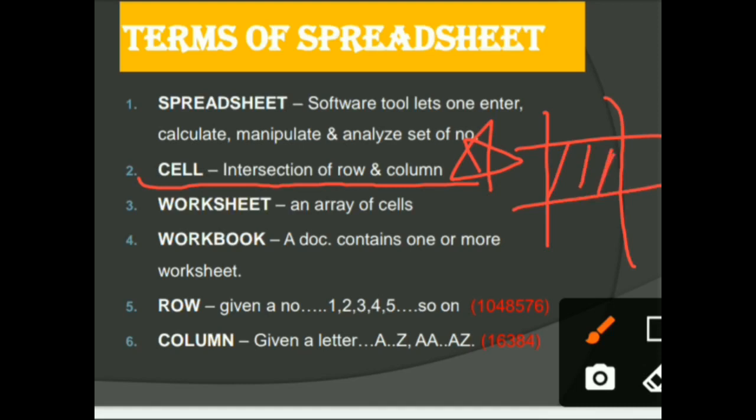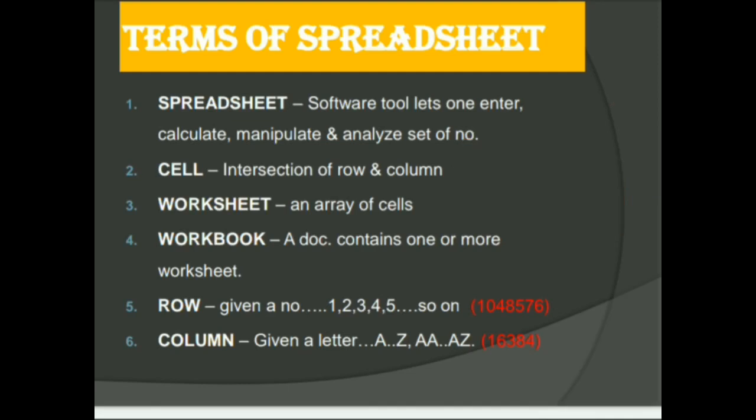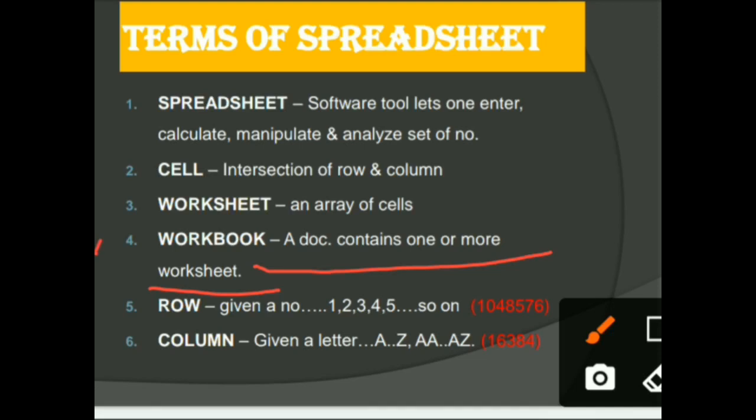Next is the Worksheet. An array of cells or a grid of cells, a complete set of cells, that is Worksheet. Workbook: a document that contains one or more worksheets is known as Workbook. Next is row. For row, as I told you, numbers are used as their name, and for columns alphabets are used: ABCD.